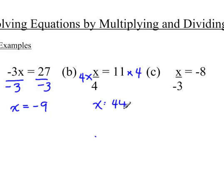And then the third one, you're dividing by negative 3. So you get rid of dividing by negative 3 by multiplying by negative 3. And again, in this case, your answer will become positive 24.